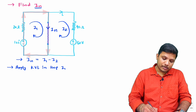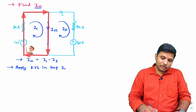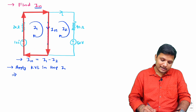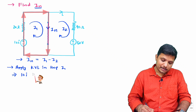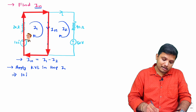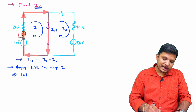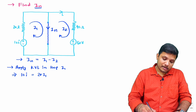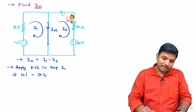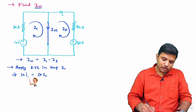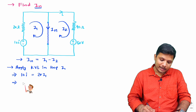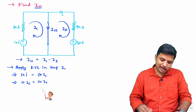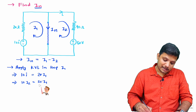Applying KVL for loop one: the voltage source goes from minus to plus, giving 10 I as the voltage value. That equals the voltage drop across the 20 Ω resistor, which is 20 I_1. The current I shown here equals I_2, so: 10 I_2 equals 20 I_1. This is equation one.